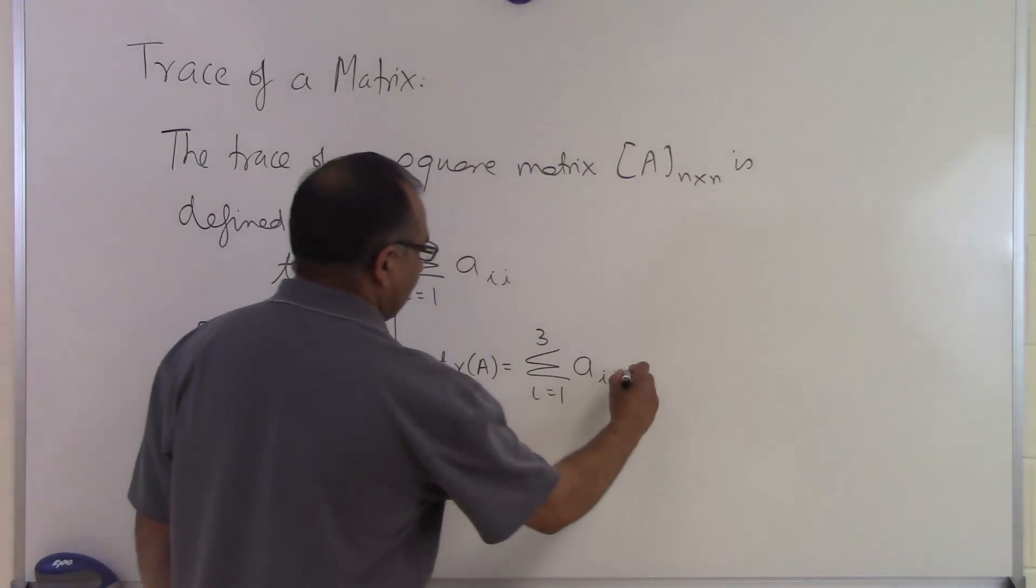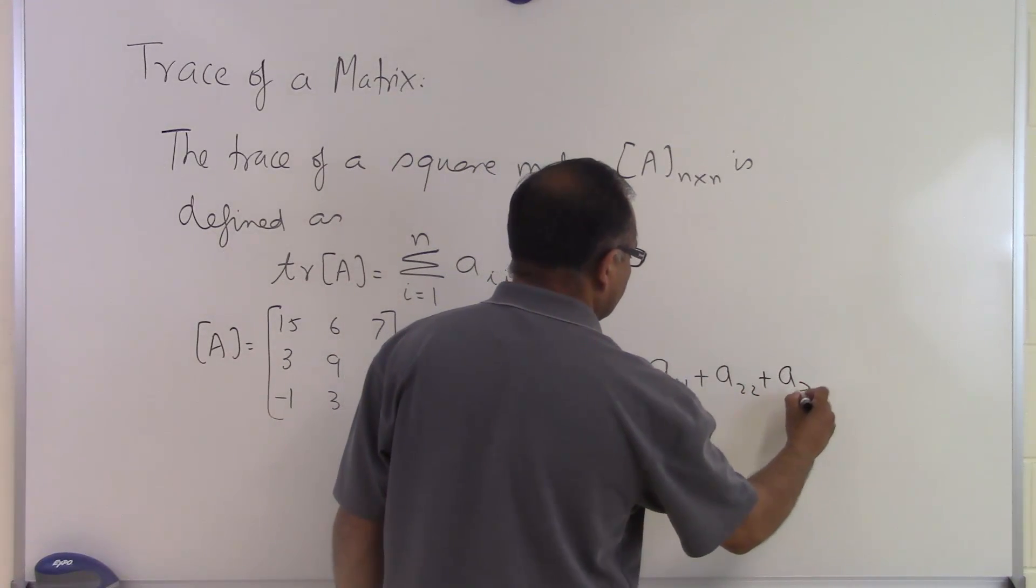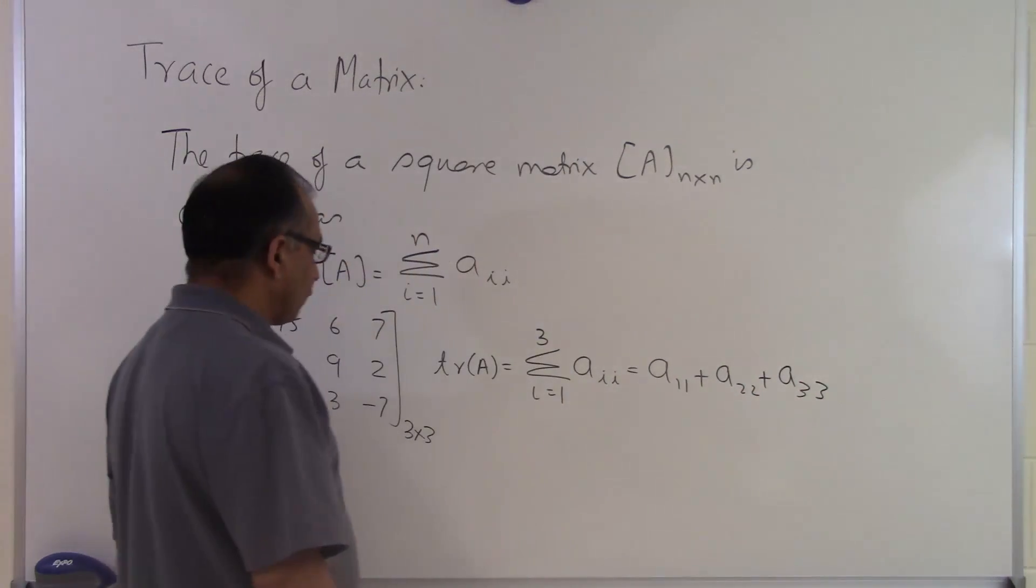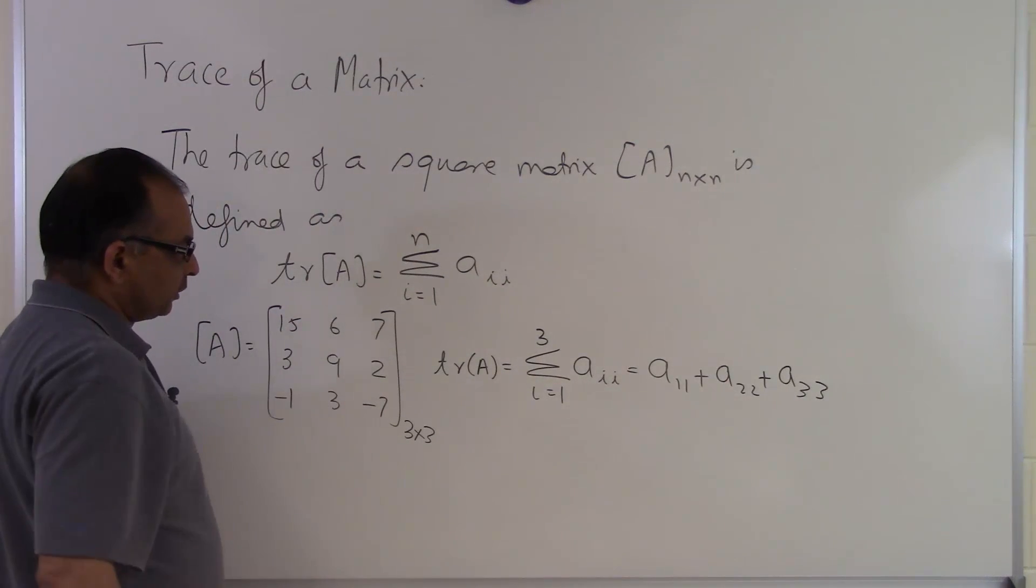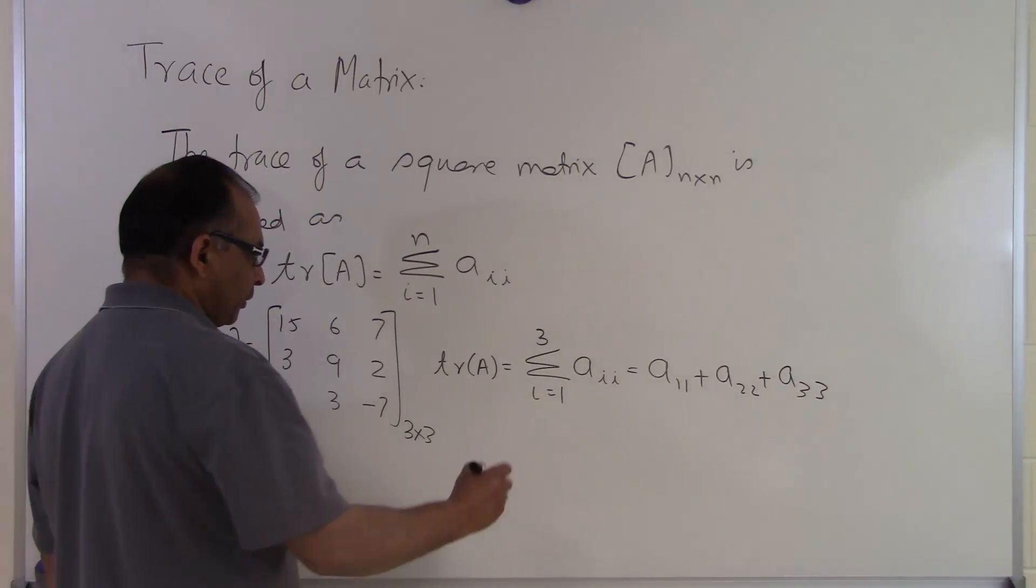So that will become A_11 plus A_22 plus A_33. It's basically the summation of all the diagonal elements, but I'm expanding it just to show you how the formula works, or if you're going to program this, how you should interpret that.